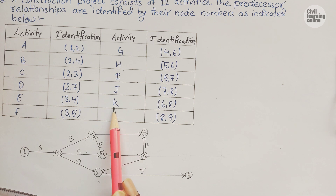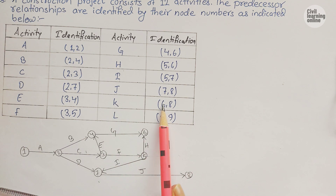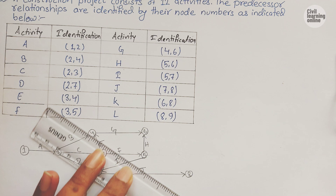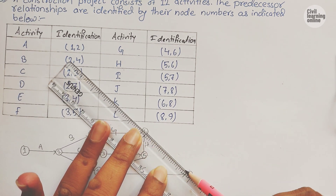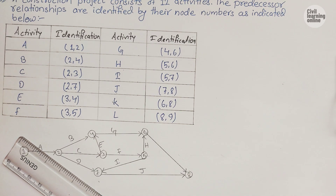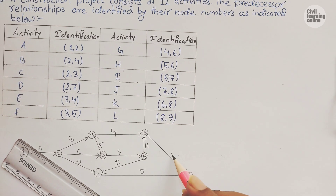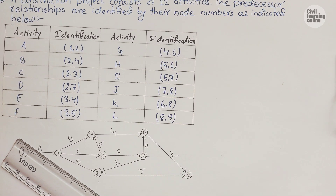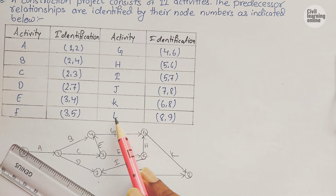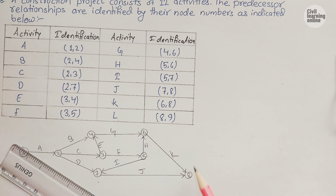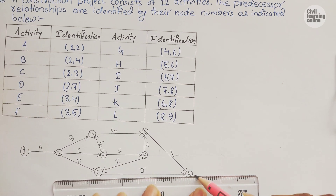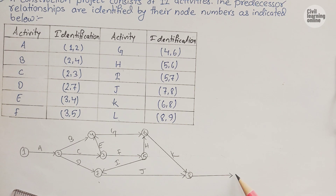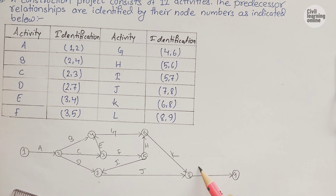Activity K starts from node 6 and terminates at node 8. Draw the activity from 6 ending at node 8 — this is activity K. Finally, activity L starts from node 8 and terminates at node 9. Draw another node 9 and this is the final activity L, completing the whole network.